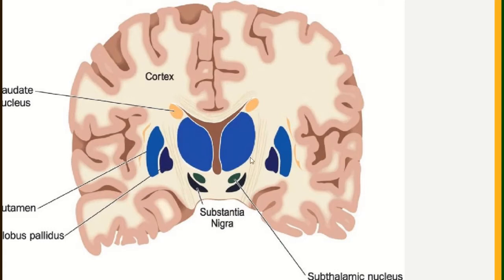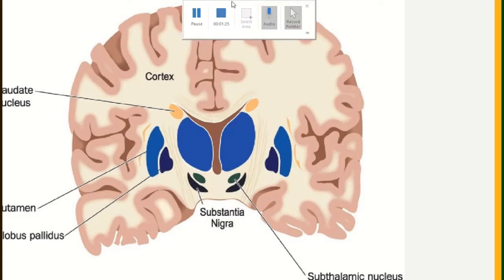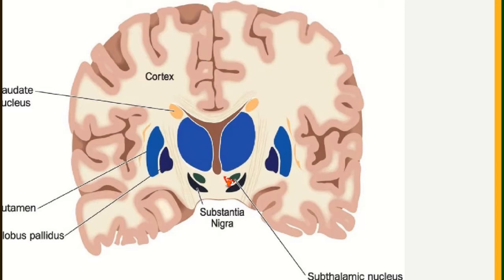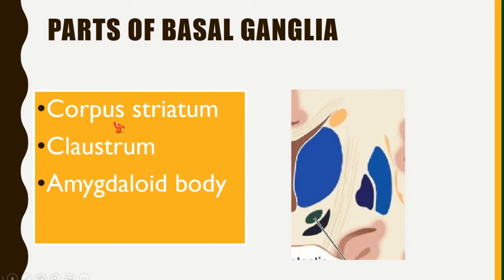In this picture, try to see carefully. The telencephalic basal ganglia comprise the corpus striatum, the claustrum, and the amygdaloid body. Remember these three terms: one is corpus striatum, second is the claustrum, and third is amygdaloid body. Then functionally, the term basal ganglia also includes substantia nigra and subthalamus.